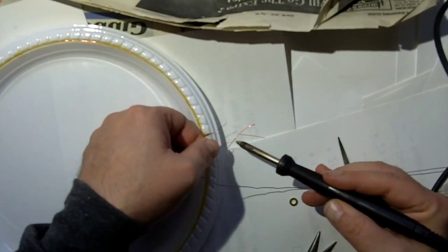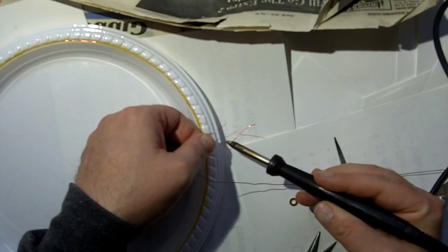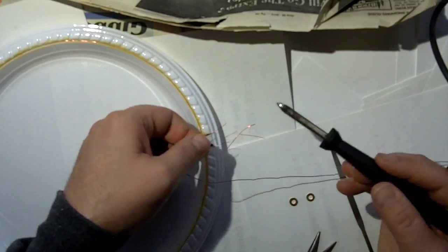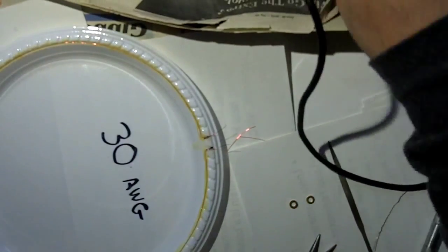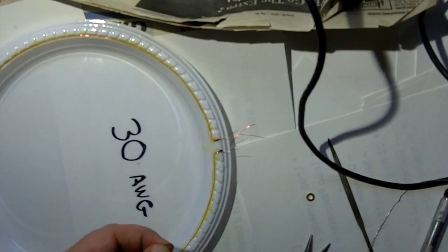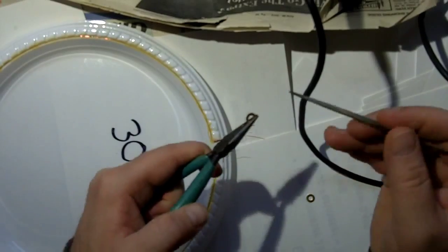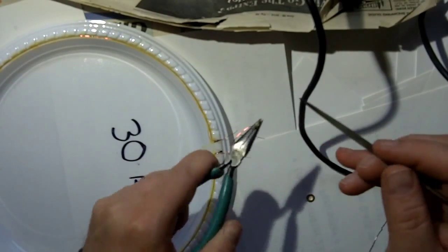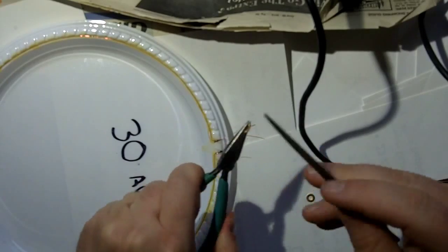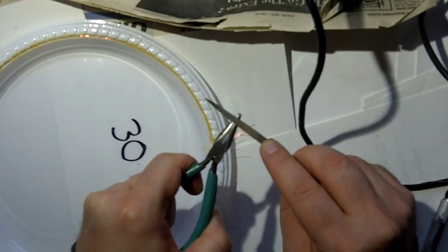Once you get the lacquer off, then you're going to tin it, tin the wire. I think the heating will take some more of the lacquer off, anything you missed. Now don't heat it too long because you're going to cook the epoxy. Then what you're going to do is take each one of your brass washers here.